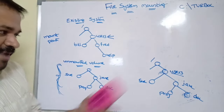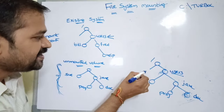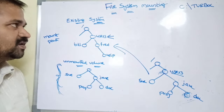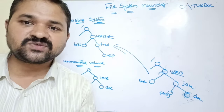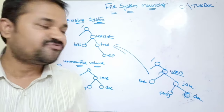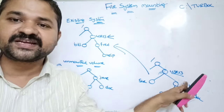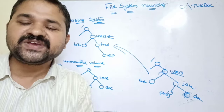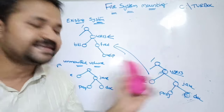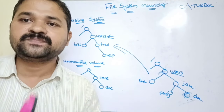If we want, we can perform unmounting. After unmounting we will get back the original existing system. So to summarize: mounting means attaching files and directories to a specific directory so that we can make use of all those files and directories at that location. This is about file system mounting.